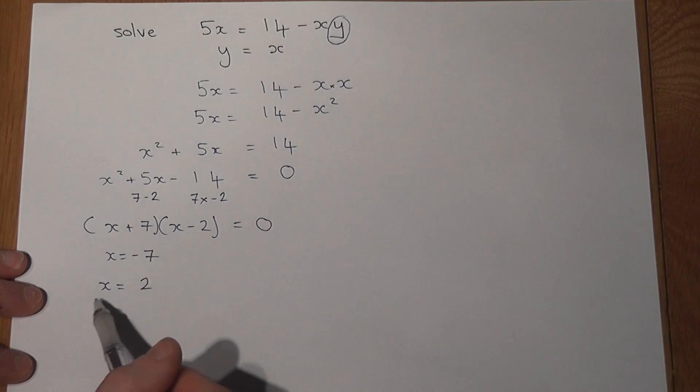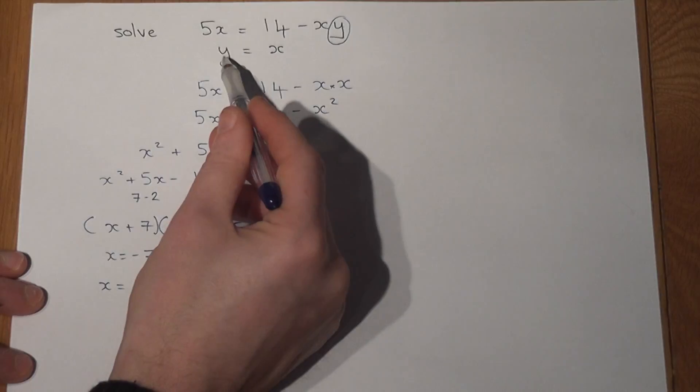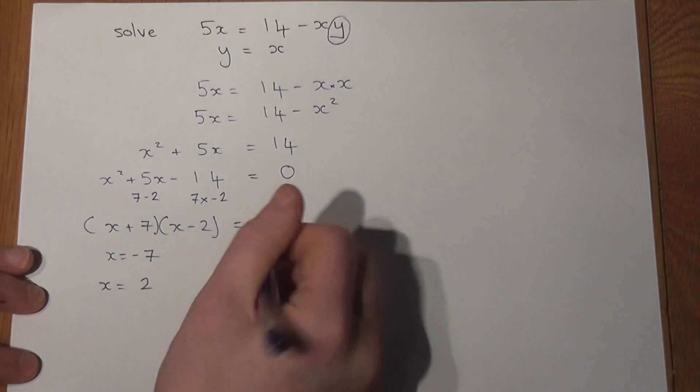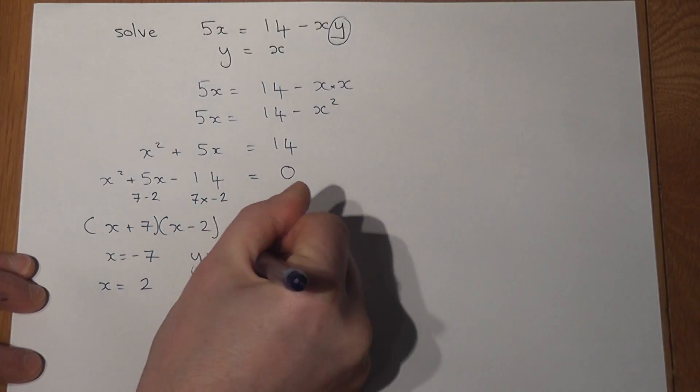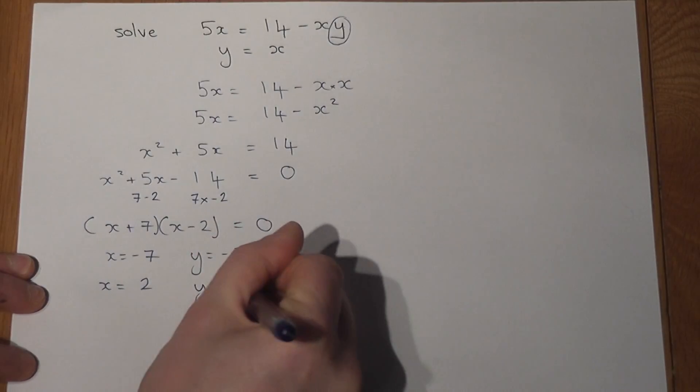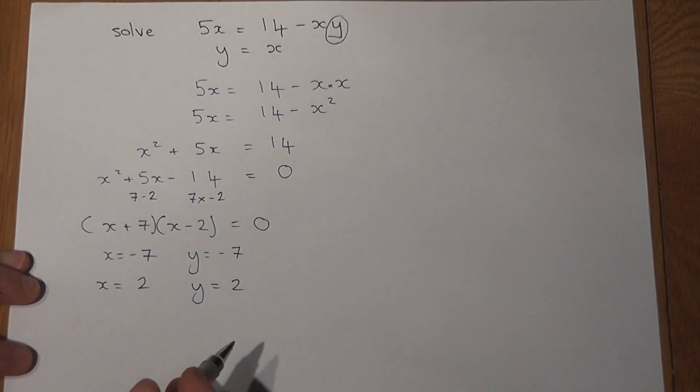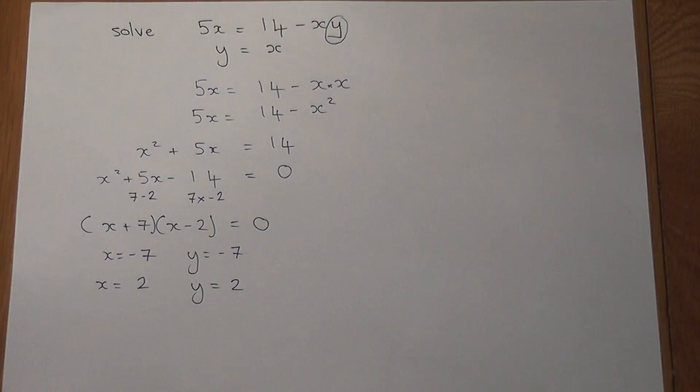So x is minus 7 or x is 2, and because y is just equal to x we can also write down that y is minus 7 or y is 2 as well. And these are the solutions to the simultaneous equations.